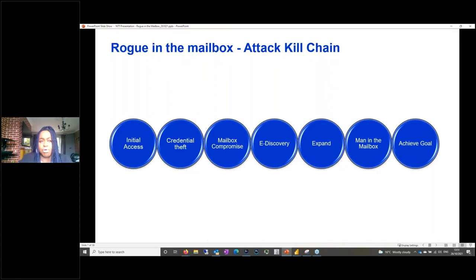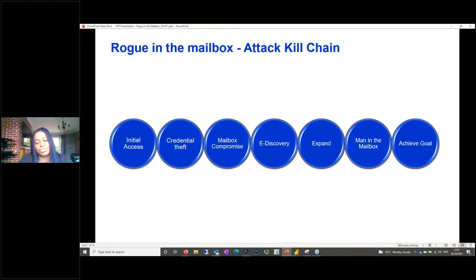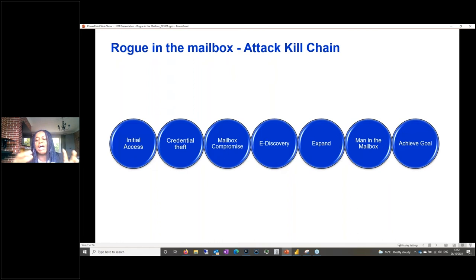We always have a kill chain for everything. For this attack, we've seen a pattern starting with initial access and credential theft. Credentials are so important — if that theft doesn't happen, most of the kill chain will stop there. But once credentials are stolen and the mailbox is compromised, the attacker performs e-discovery — they don't want to waste time in an environment where there's nothing to offer. Then they expand scope, act as a man in the mailbox — intercepting communications between sender and receiver — to achieve their primary financial goal.